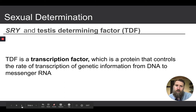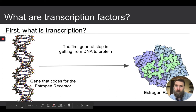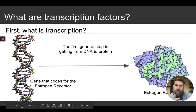So, what kind of protein is the testes determining factor? It's a transcription factor — a protein that has a very specific function. It controls the rate of transcription of genetic information from DNA to messenger RNA, which is the first step of getting from DNA to a protein.